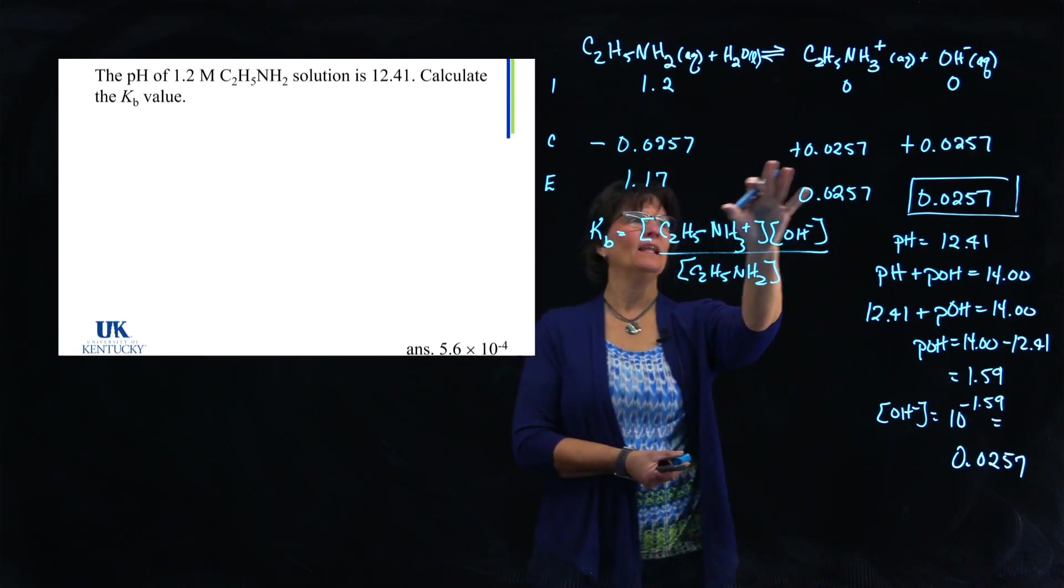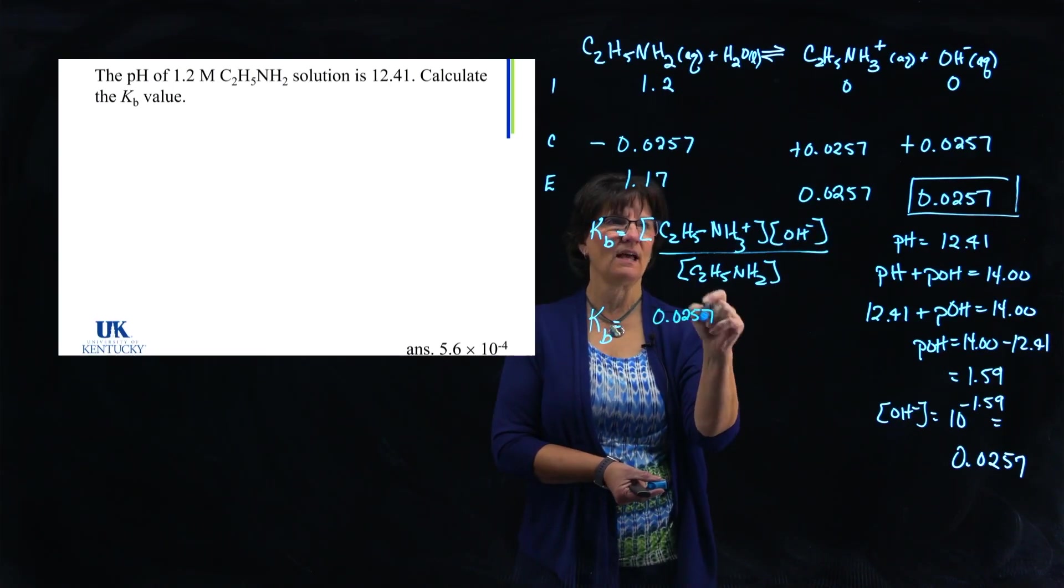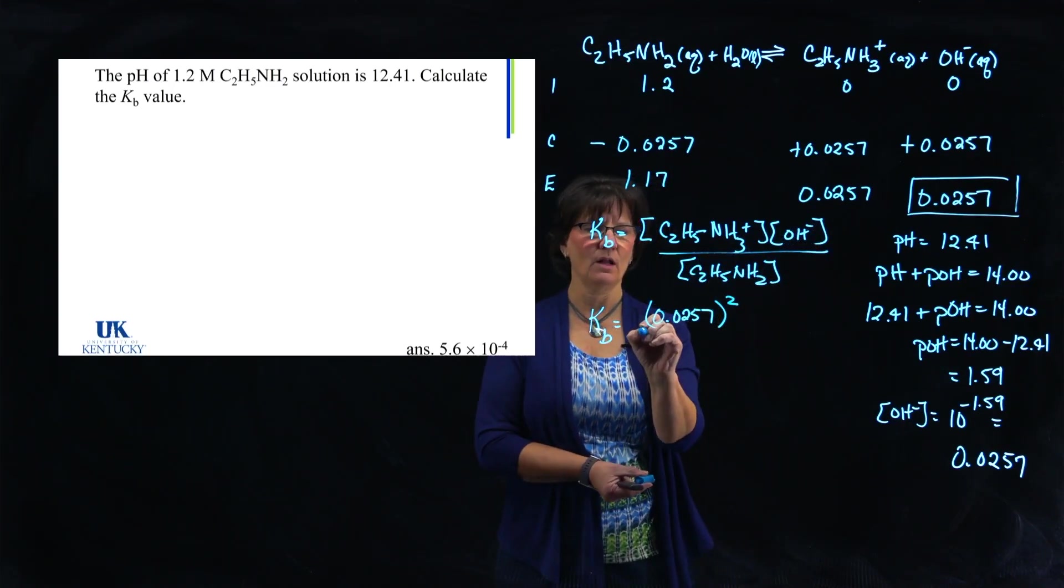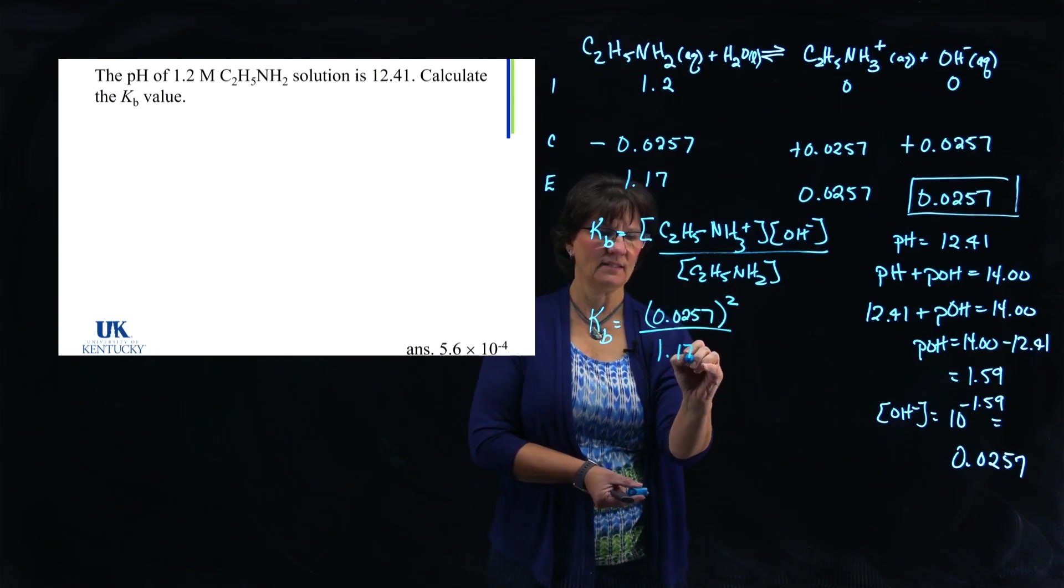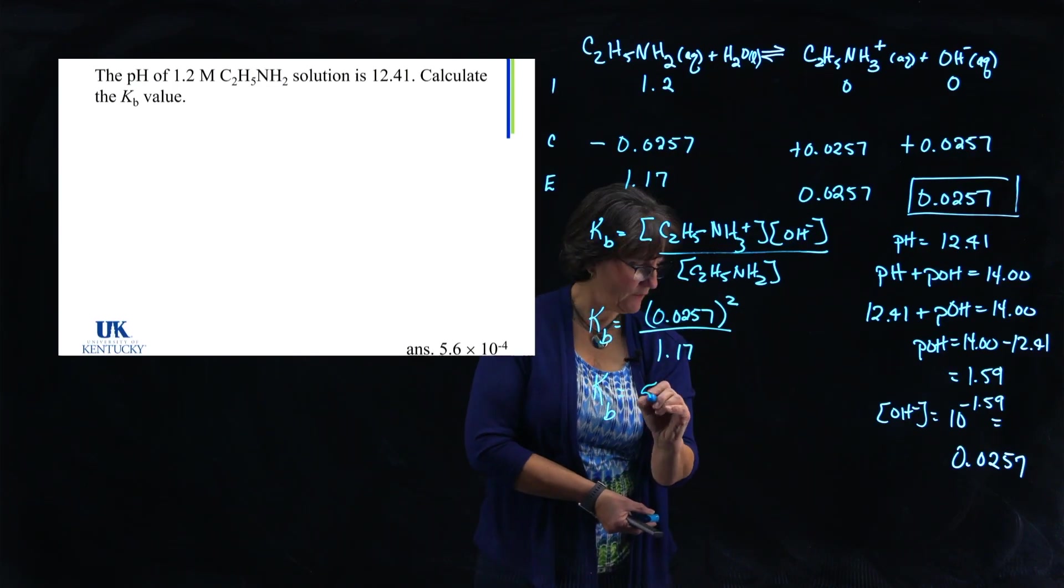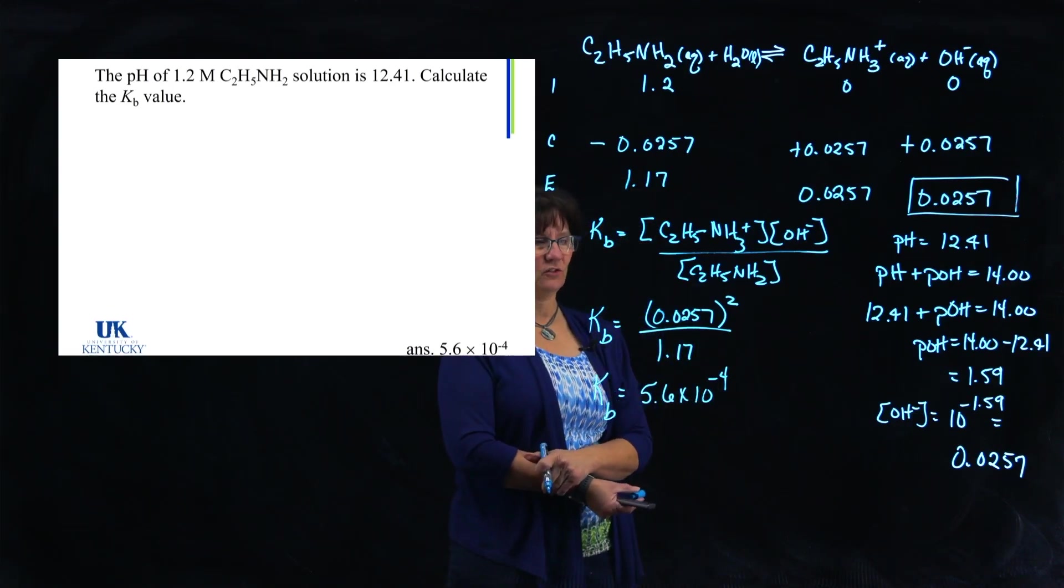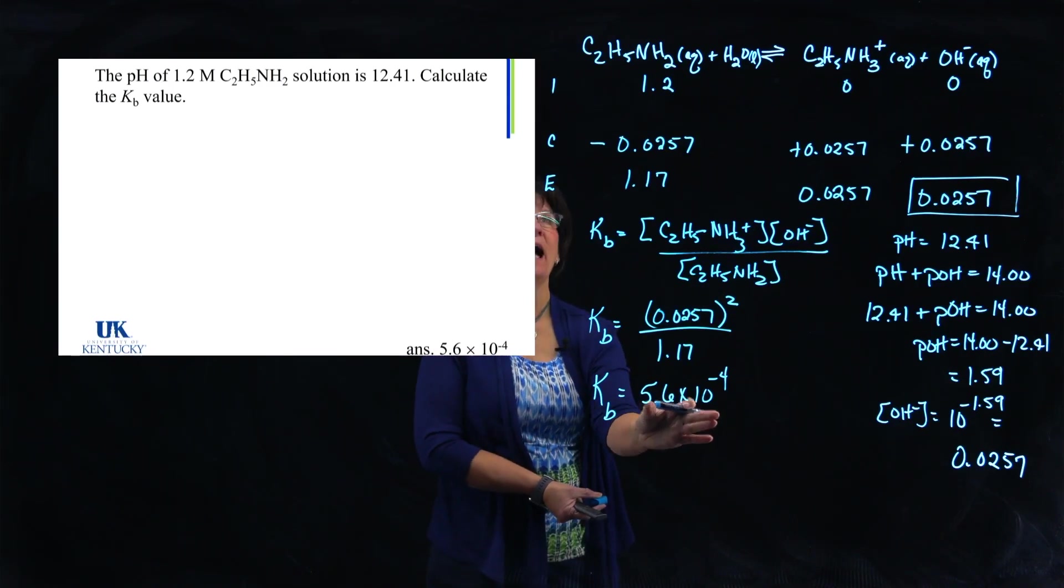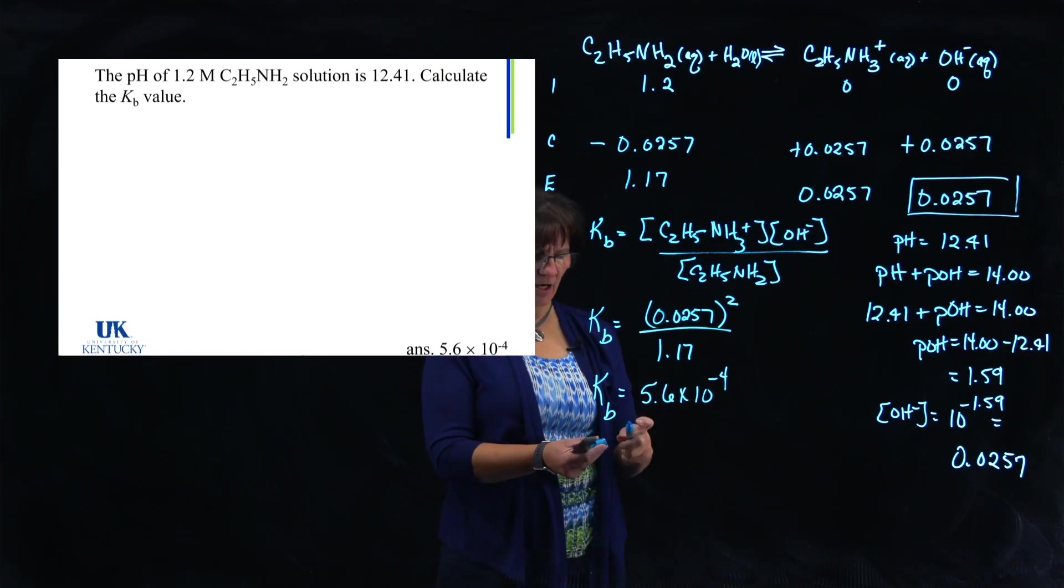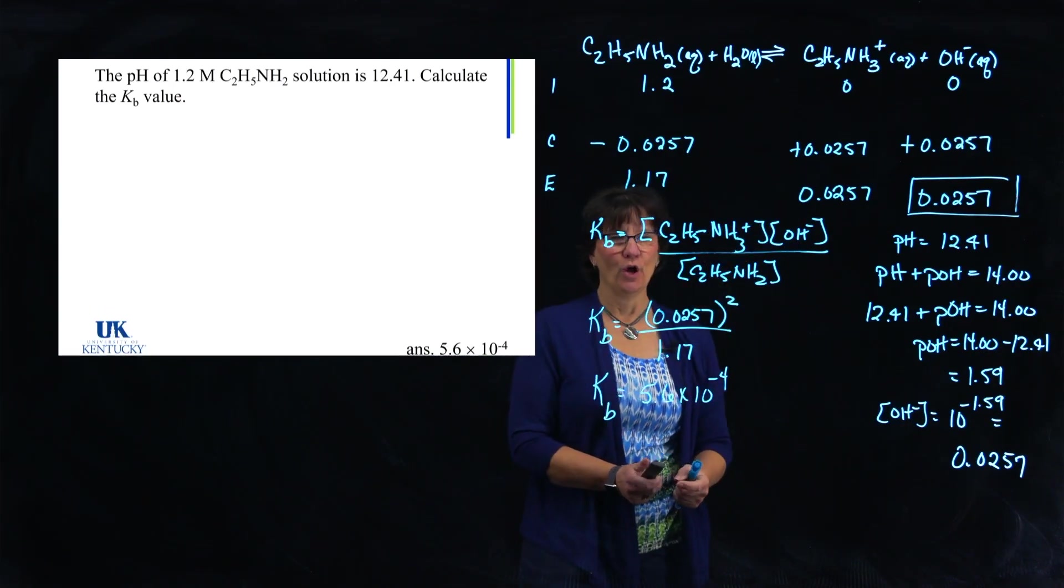So now I've got values in the E line and I can go and obtain a value for KB. I will plug in the 0.0257 for this, the same number for the OH minus, so that's squared, and divide by the 1.17. And all of that to get what we're looking for, which is the KB of this base. It's 5.6 times 10 to the minus 4. Now, before we let it go, we should think about does this make sense? We have a small K. Weak acids have small Ks, so that makes sense. If I had a positive power here, I know that I had done something a little bit off. So there we go with obtaining a KB when you know the pH.